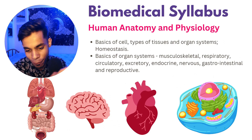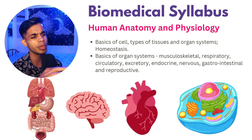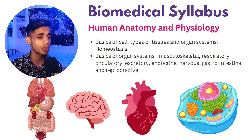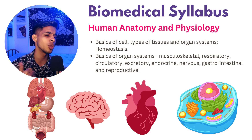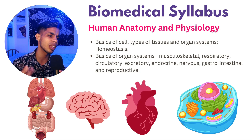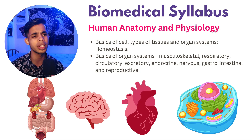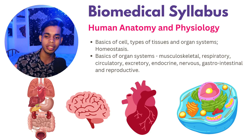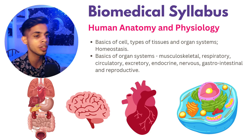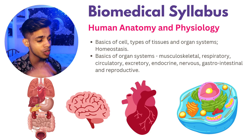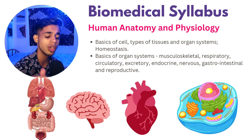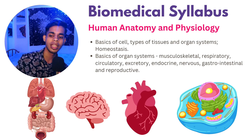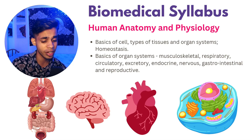Human anatomy and physiology is another favorite topic. It covers basics of cell biology, types of tissues, organ systems, homeostasis, and the basics of each organ system including musculoskeletal, respiratory, circulatory, excretory, endocrine, nervous, gastrointestinal, and reproductive systems. Starting your GATE preparation with this topic is highly recommended — it's enjoyable and will keep you motivated to tackle harder subjects.